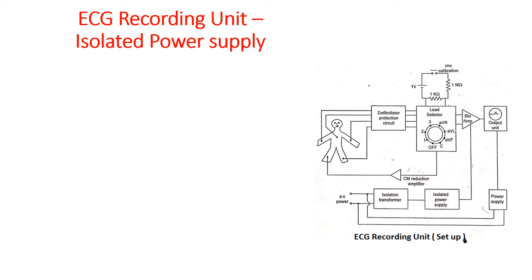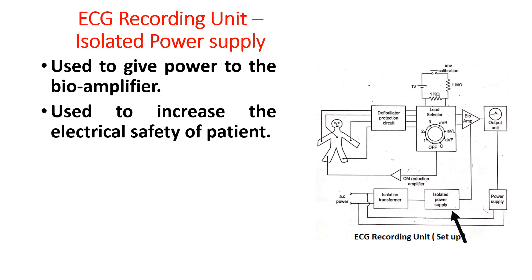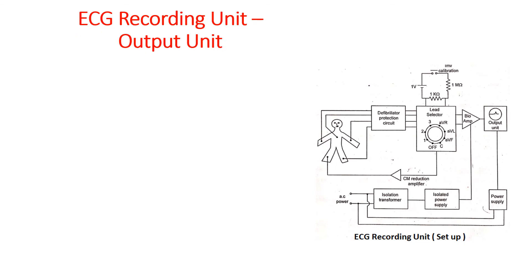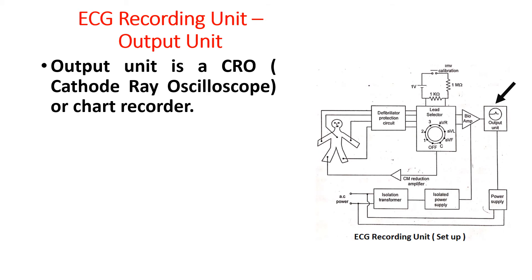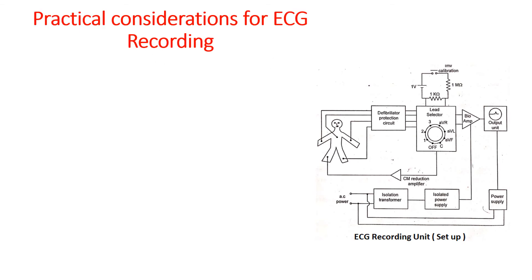An isolated power supply is used to give power to the bioamplifier. It is used to increase the electrical safety of the patient. The output unit is a CRO — that is, a cathode ray oscilloscope — or a paper chart recorder. In the case of a paper chart recorder, the power amplifier or pen amplifier supplies the required power to drive the pen motor. So far we have discussed about the ECG recording unit.